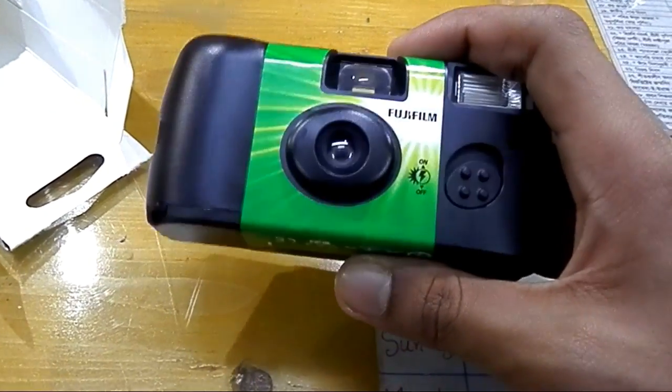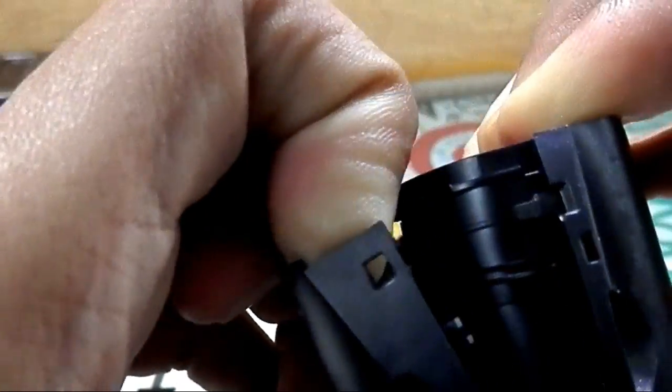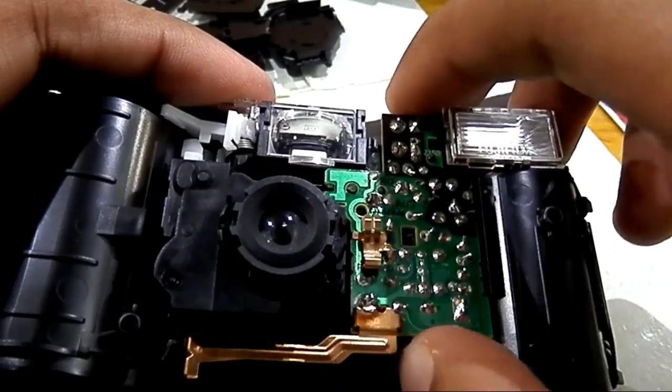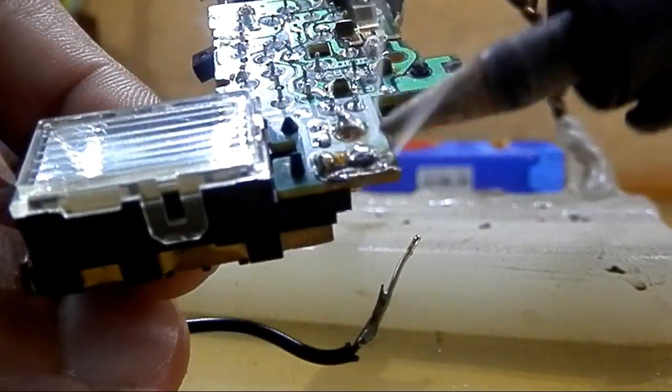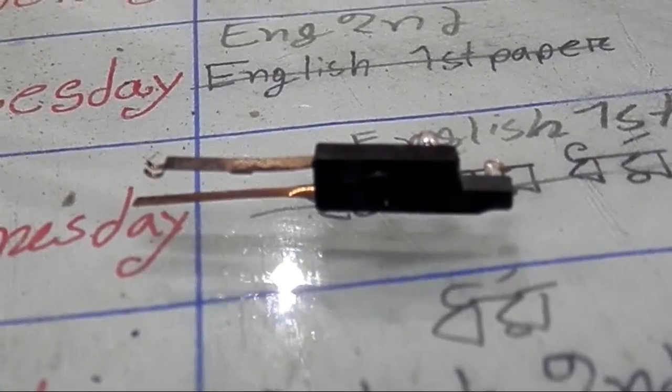I started to make the coil gun with this Fujifilm disposable camera. I simply opened it using bare hands, then took the circuit and desoldered some unnecessary components including the flash and the switch. I soldered the switch which used to charge the capacitor.